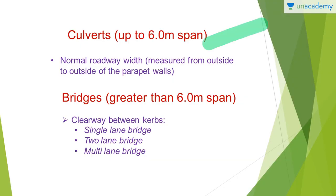Culverts have a span of up to 6 meters maximum and are measured from outside to inside of the parapet walls. Culverts are provided below the road — they are usually circular shaped and are used to carry drains or water from one part of the road to another, basically for the passage of water. That is why culverts are provided below the roads, so that the road has its foundation while also allowing passage of water below.